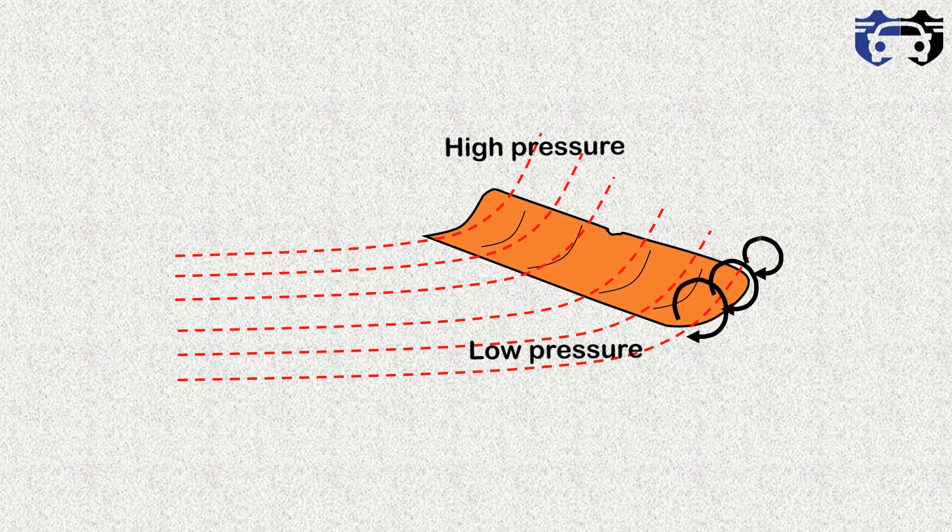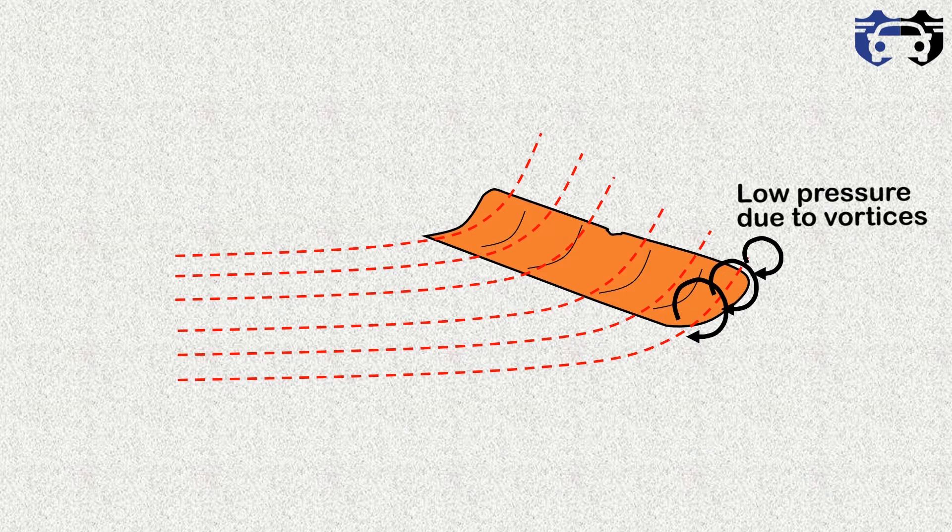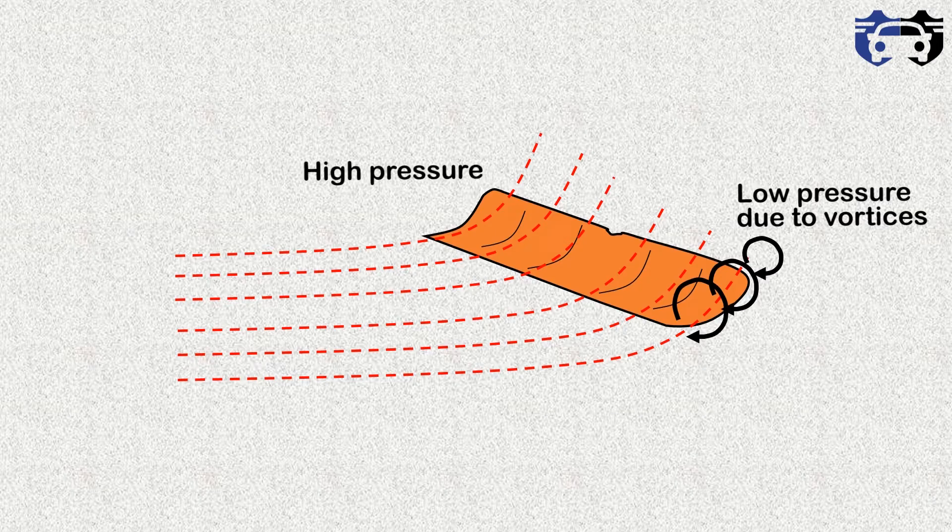What actually do these vortices do? Building of vortices leads to a decrease in pressure at the trailing edge. At the front we are having the high pressure and at the rear we are having the low pressure. This will lead to a generation of drag.